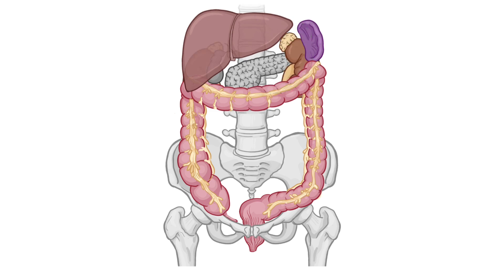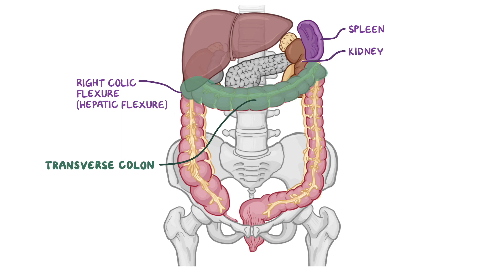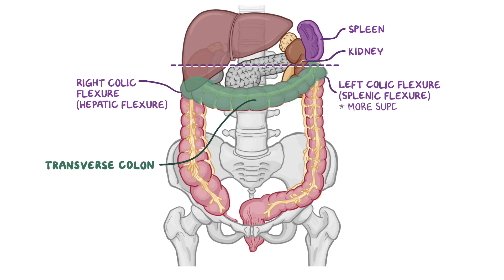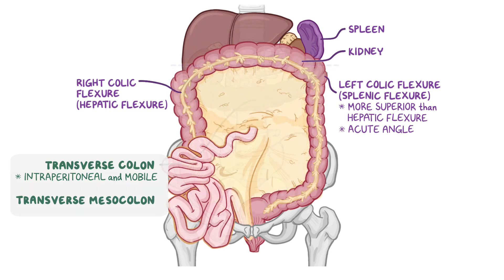After the ascending colon comes the transverse colon, which extends from the right colic flexure or hepatic flexure and travels horizontally to the left. Once at the spleen, it turns downwards in front of the lower portion of the left kidney to become the descending colon, giving us the left colic flexure or splenic flexure, which is more superior than the hepatic flexure and has a more acute angle. The transverse colon is intraperitoneal and therefore mobile, and can hang down to the level of the umbilicus. It has a mesentery called the transverse mesocolon that is rooted alongside the inferior border of the pancreas, loops down, and can extend past the iliac crests.